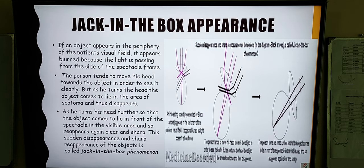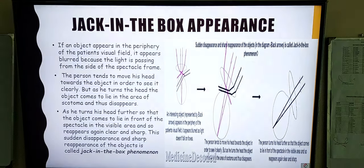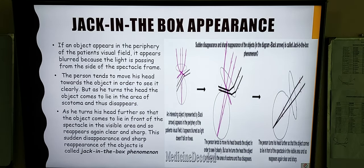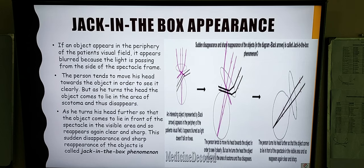In relation to that, we have a phenomenon known as the jack-in-the-box appearance. Suppose an object appears in the periphery of the patient's visual field — it will appear blurred as the light is passing from the side of the spectacle frame. In order to view the object, the person turns his head, but now the object lies in the field of that ring scotoma and it disappears. When he turns his head further, the object then lies in the central field of the patient and it reappears. This sudden disappearance and reappearance of the object is known as the jack-in-the-box phenomenon, and it is commonly seen in patients of aphakia corrected by the use of spectacles.